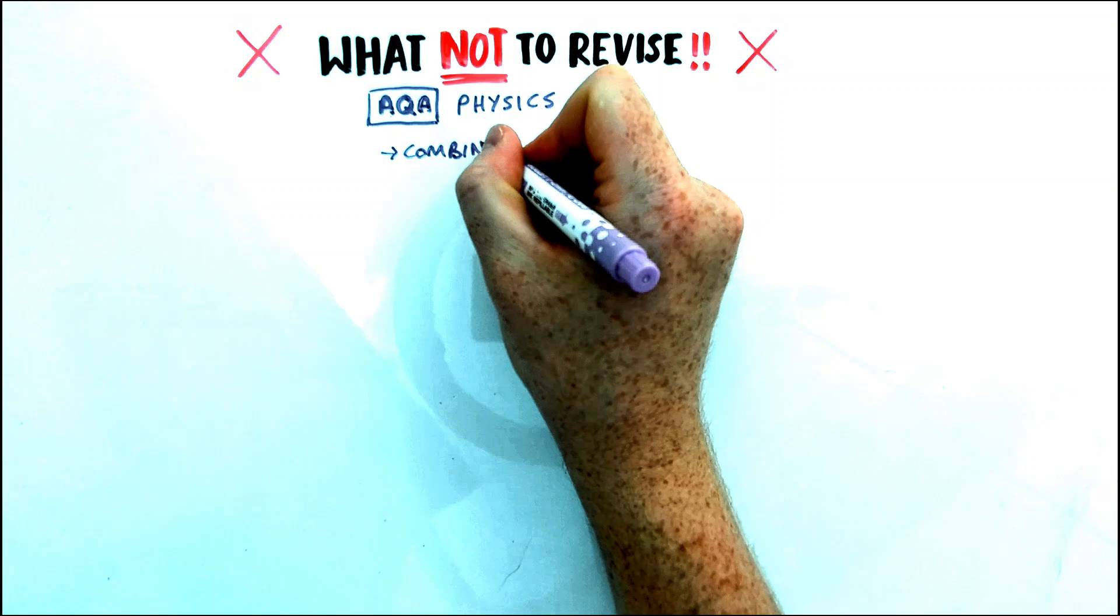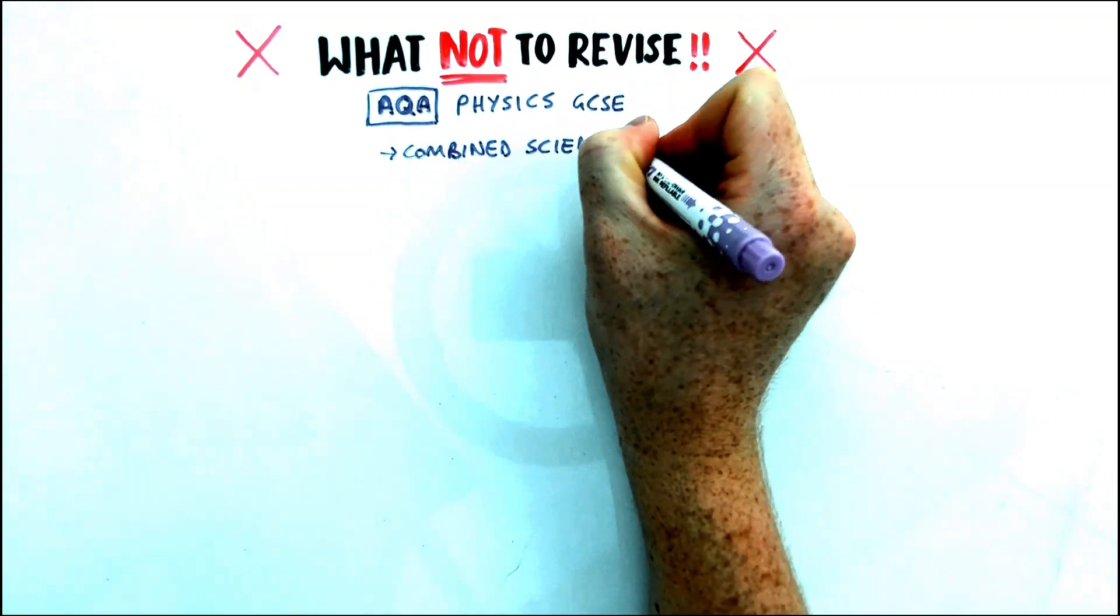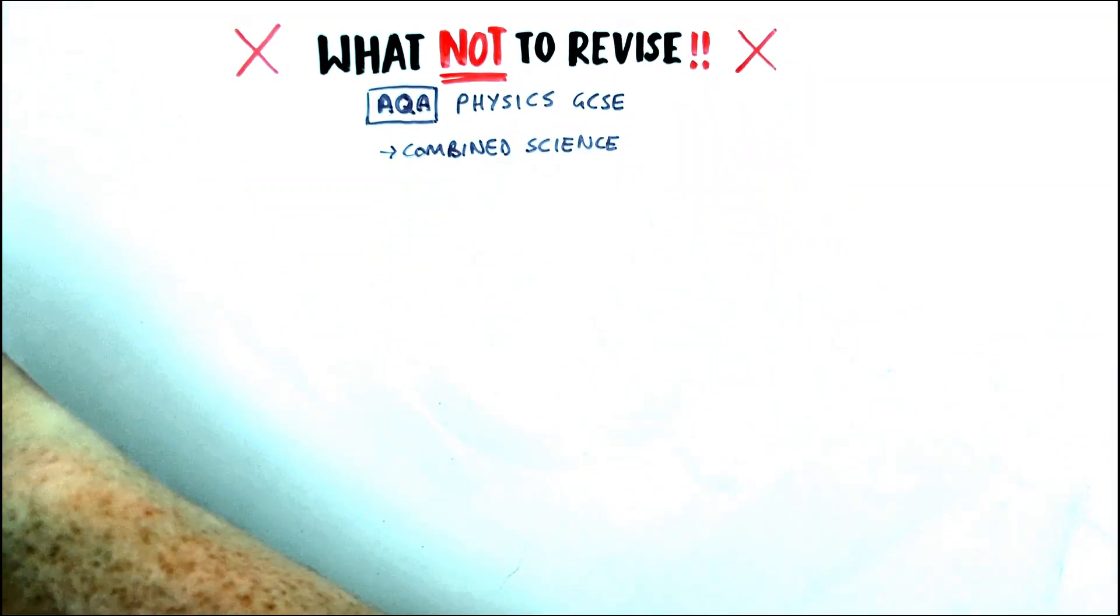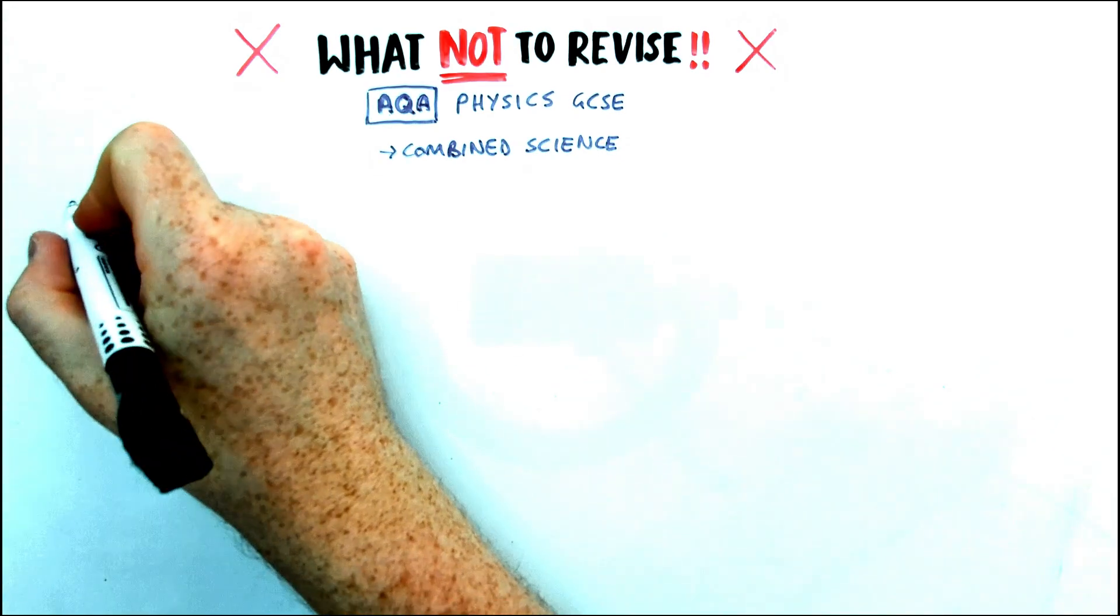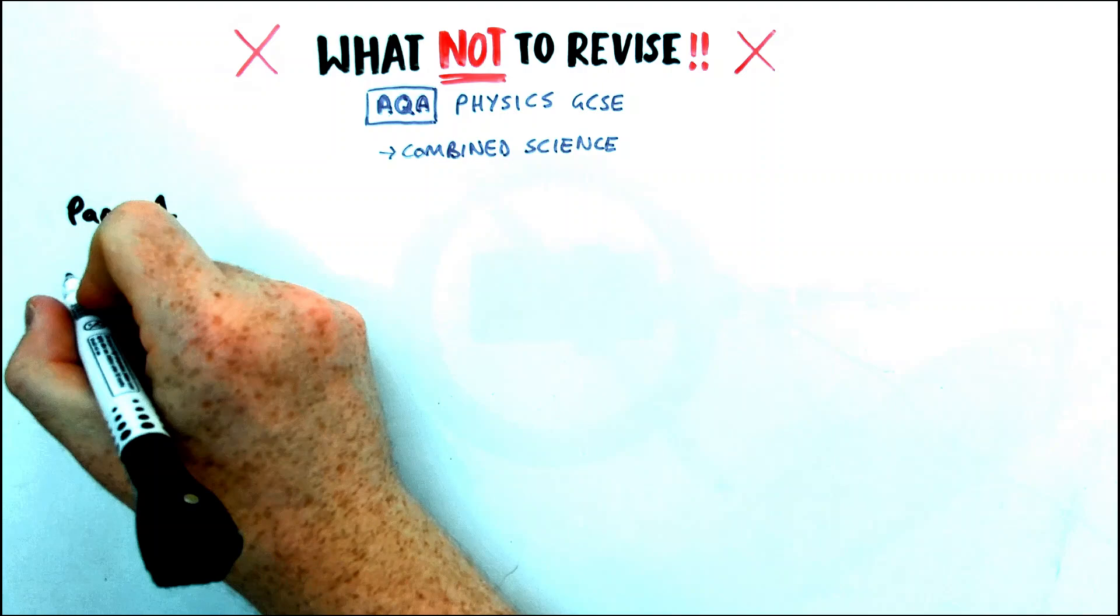So that's the list of paper one and paper two, things you don't need to speak about at all, but you might find in revision guides and in other exam boards. Let's look if you're doing combined science. These are things you don't need to revise for your GCSEs.